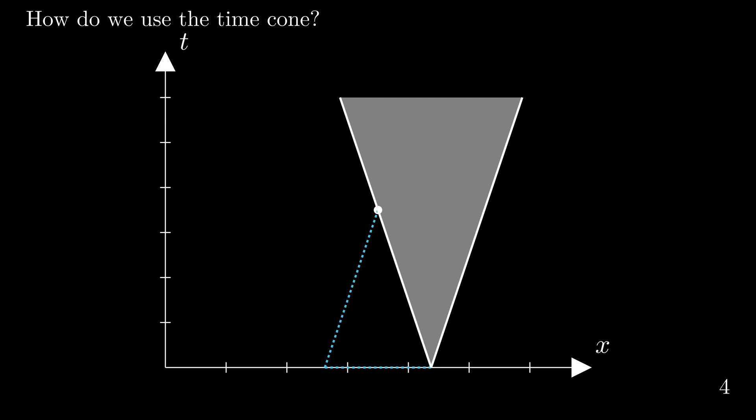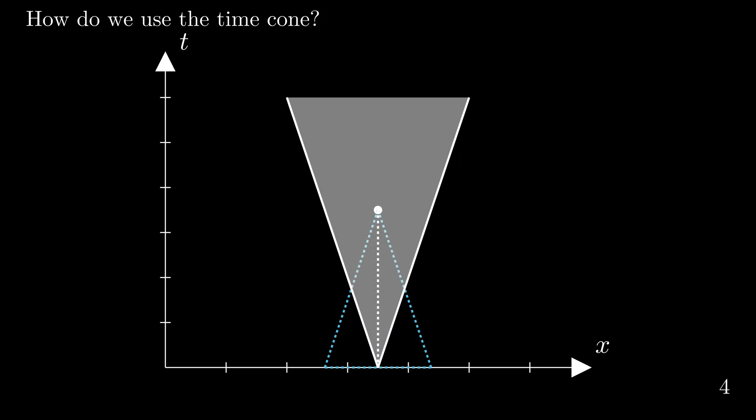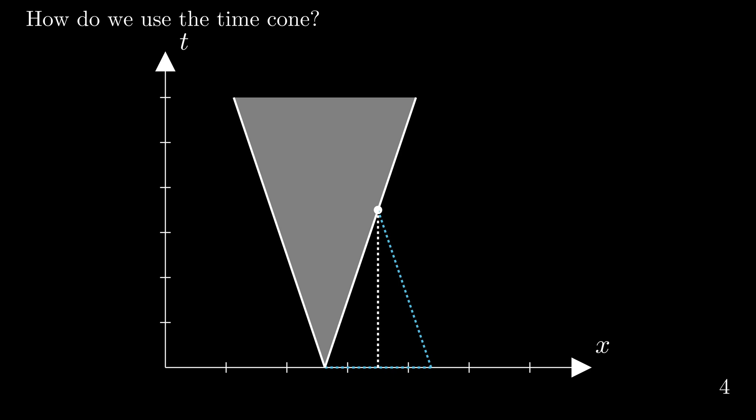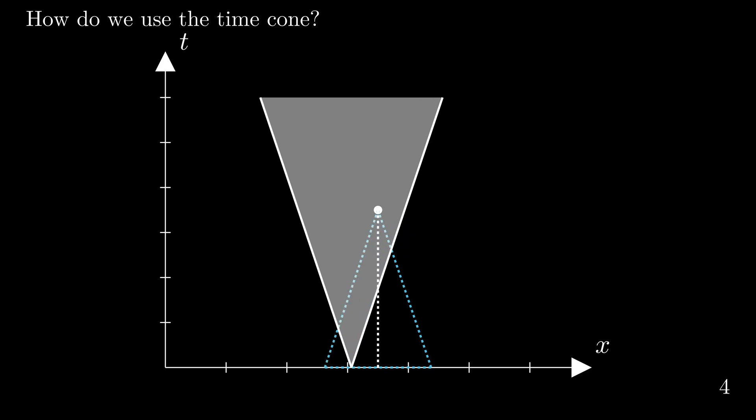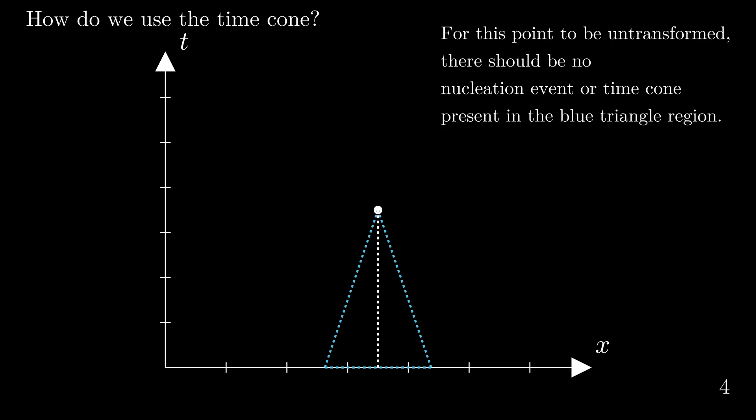We have proven that only the time cones within this blue triangle region will lead to a phase transformation at that dot in spacetime. With concurrent nucleation and growth, there are two possible ways a point at a given position and time will be transformed: first, the position is the origin of a nucleation event that takes place at this exact moment or at an earlier time; second, this point is not the origin of a nucleation event, but a prior nucleation event somewhere else has grown to this position at this moment or earlier. The takeaway is that for this point to be transformed, there should be at least one nucleation event inside the blue triangle region; conversely, for it to be untransformed, there should be no nucleation event in this blue triangle region.